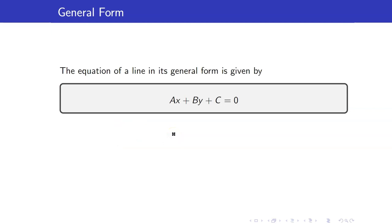The equation of a line in its general form is given by ax plus by plus c equals 0. This just means that one side of the equation is 0.